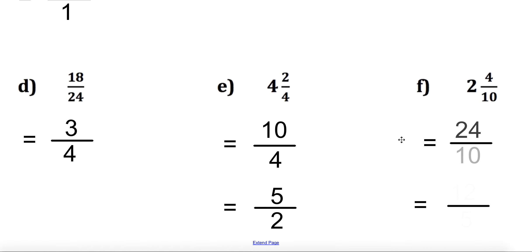Here, we change it into an improper fraction. 10 times 2 is 20, plus 4 is 24. Divide both of those by 2, I get 12 over 5.